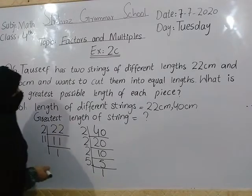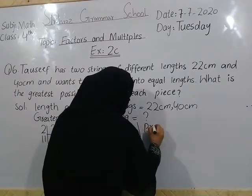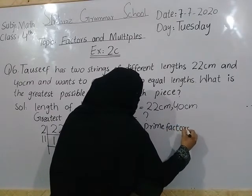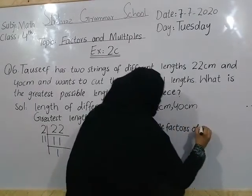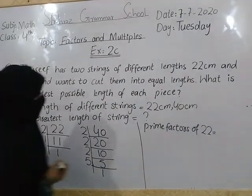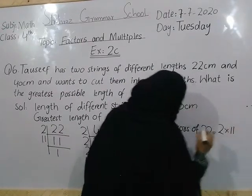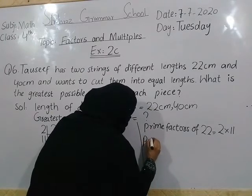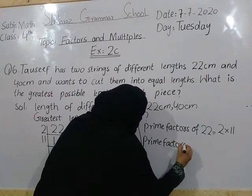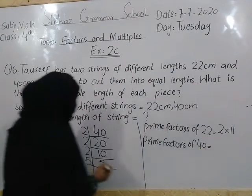Now what do we find here? Prime factors of 22. Prime factors of 40 are found as well.